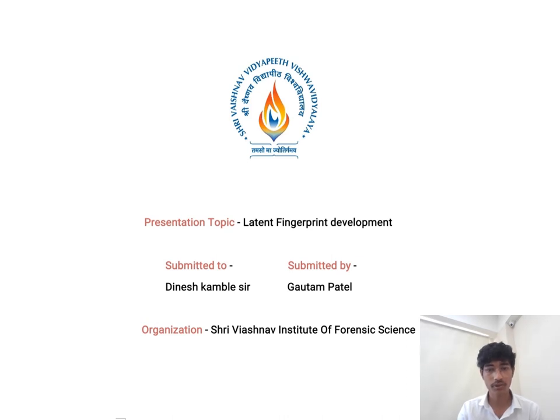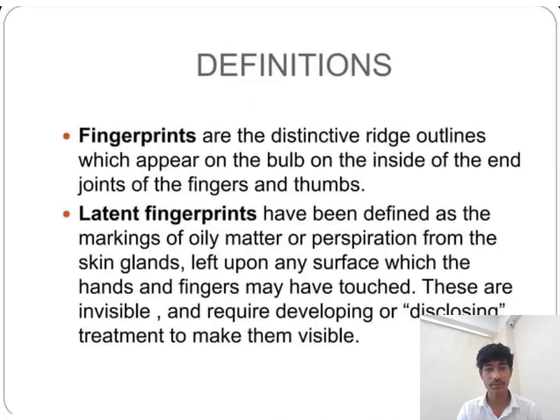First we talk about what are fingerprints. Fingerprints are distinctive ridge outlines which appear on the bulb on the inside of the end joint of the fingers and thumbs.